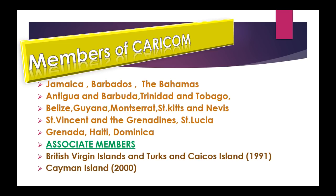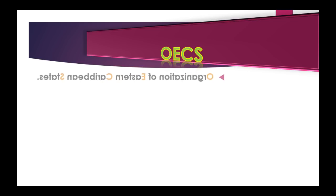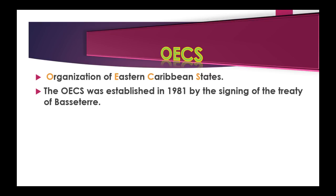Next, OECS stands for the Organization of Eastern Caribbean States. The OECS was established in 1981 by the signing of the Treaty of Basseterre.